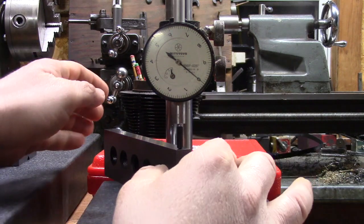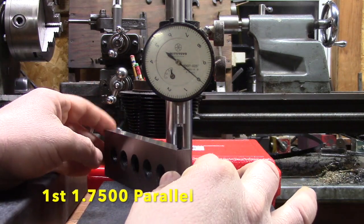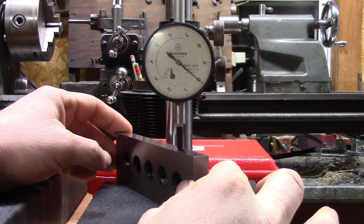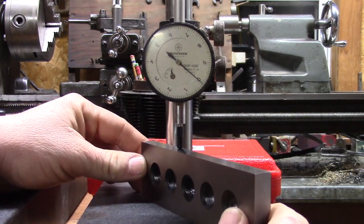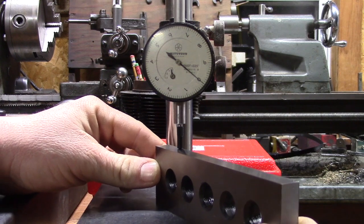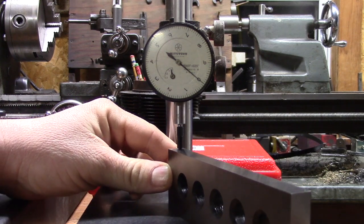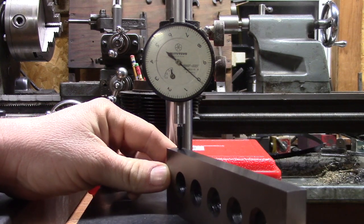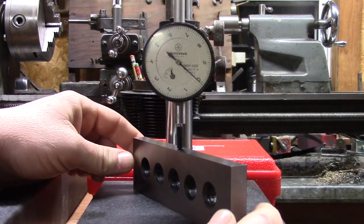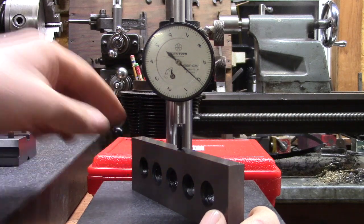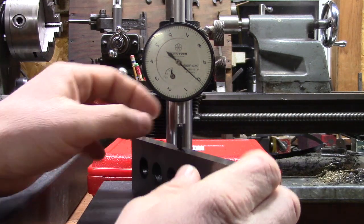Let's take a look at this one here. We have a zero set. I had a total indicator readout there of just under one tenth variation. That's real close to a tenth right there. So this one passes the quality test.